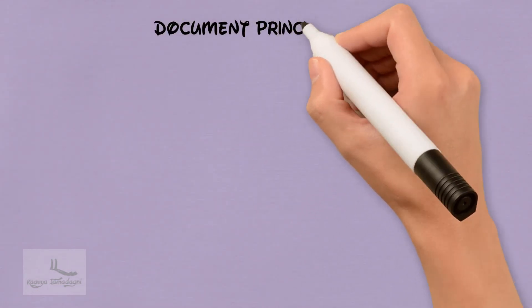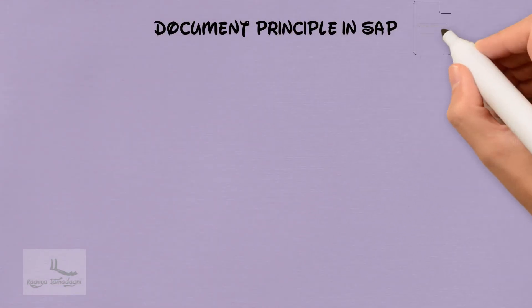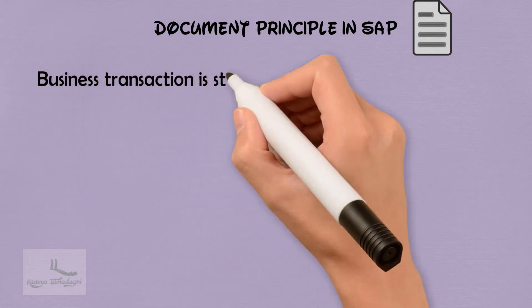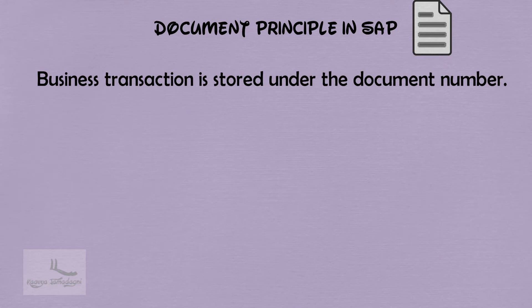Document Principle in SAP. The complete SAP, not only the FI module, but the complete SAP is based on this document principle. Whenever you do any business transaction, irrespective of SAP module, the business transaction is always stored under the document number. This is known as the document principle in SAP, and we have got three concepts under this document principle.